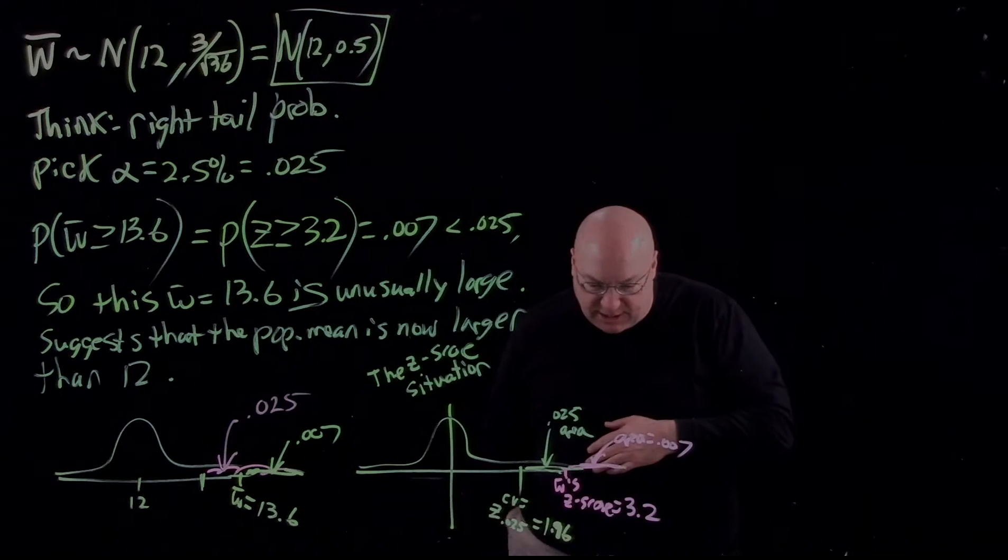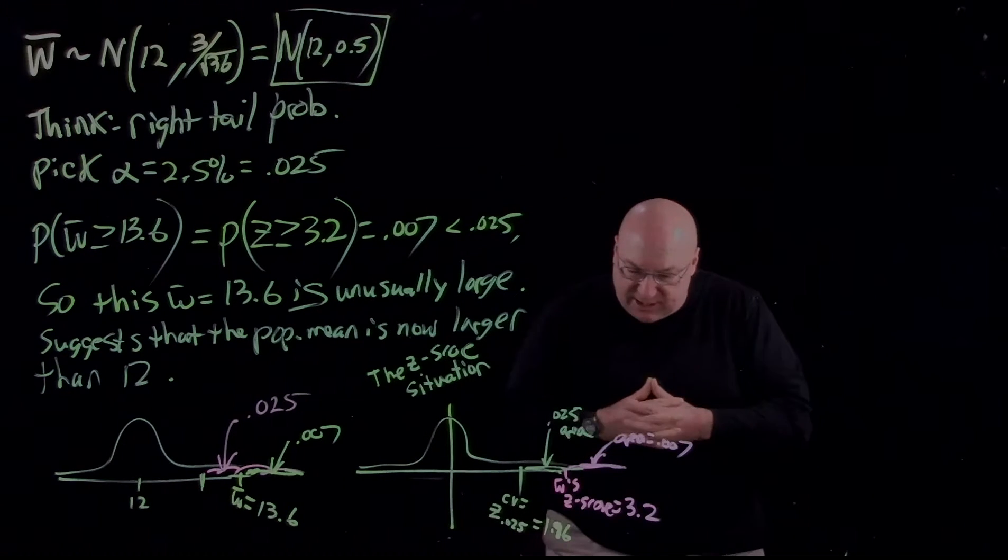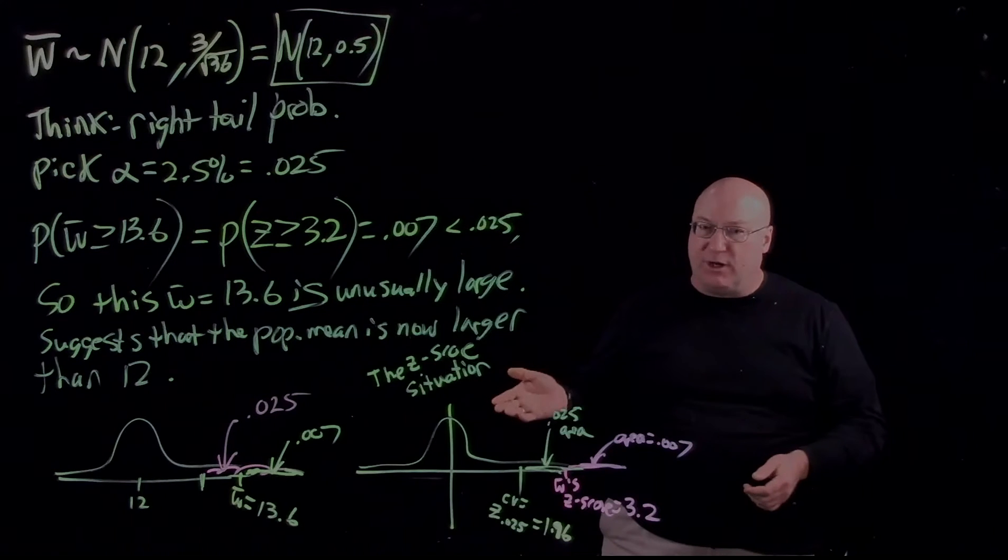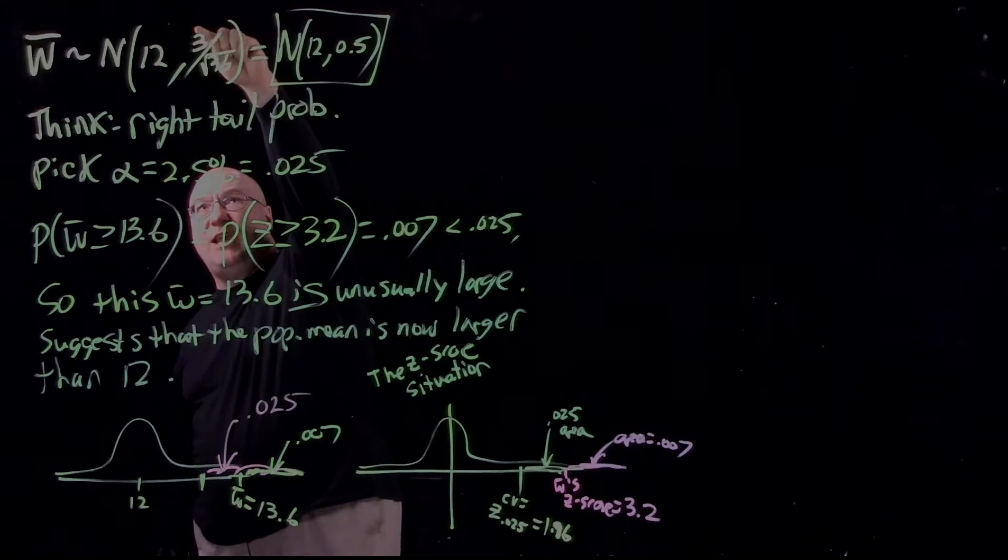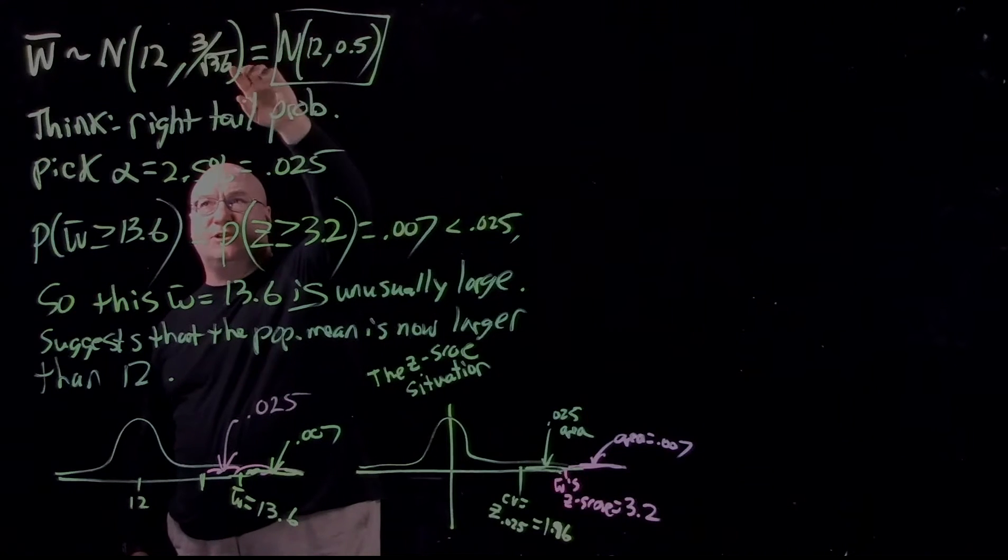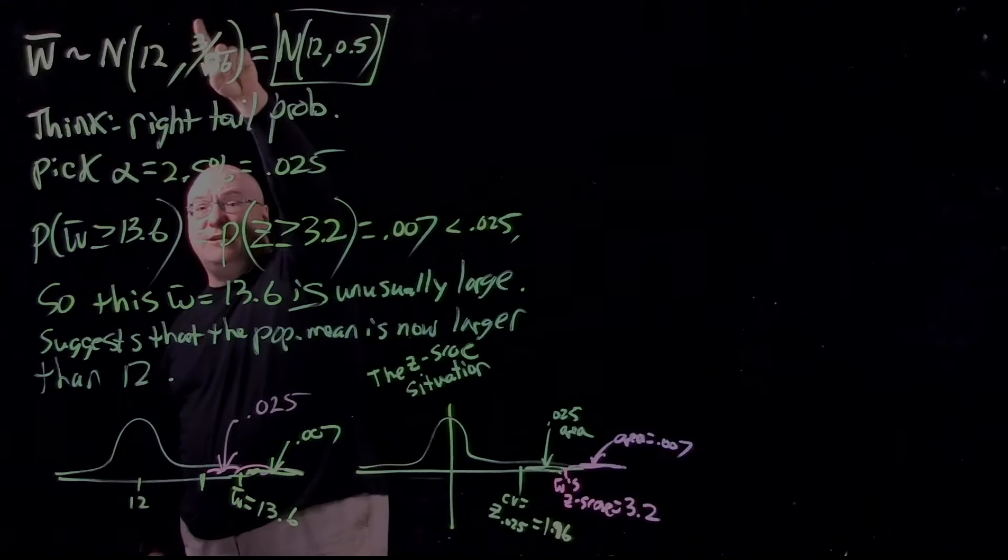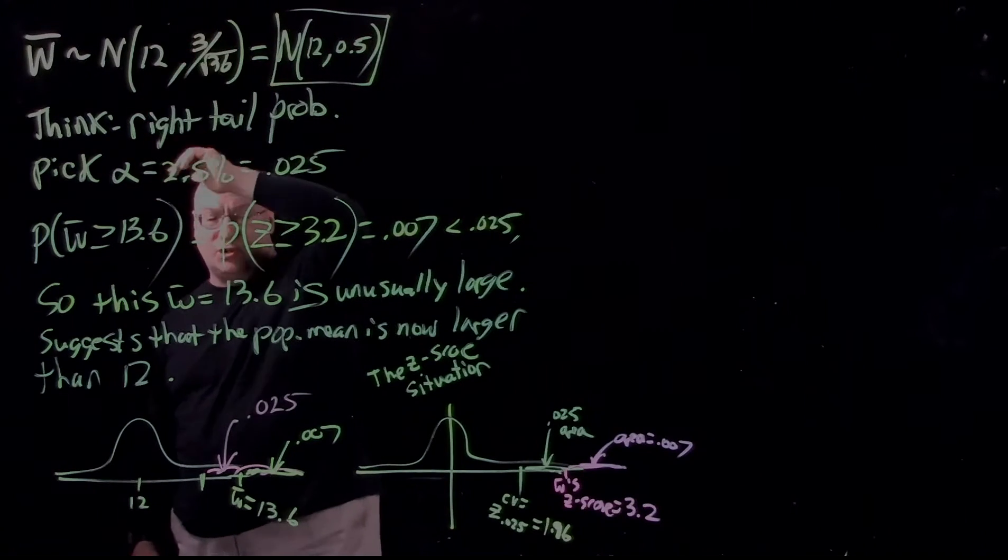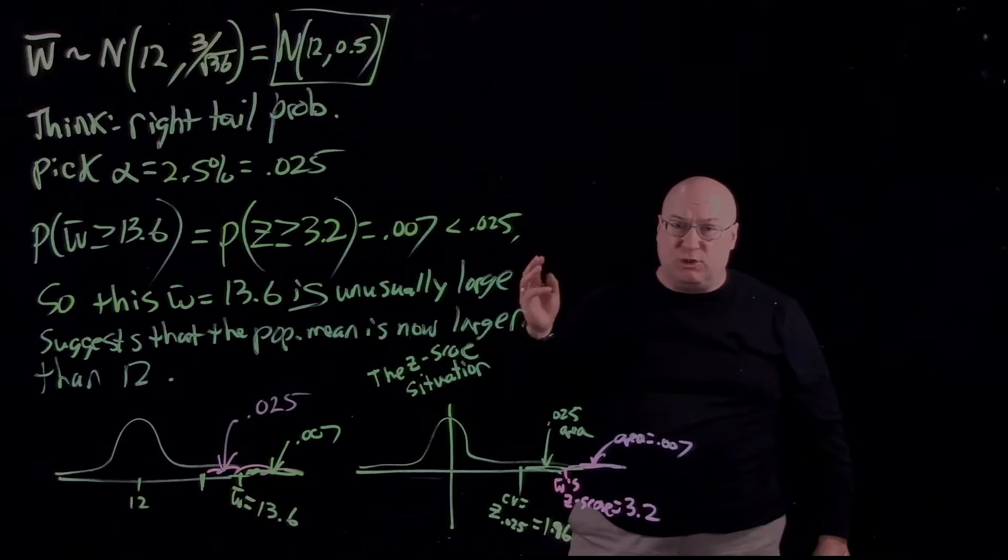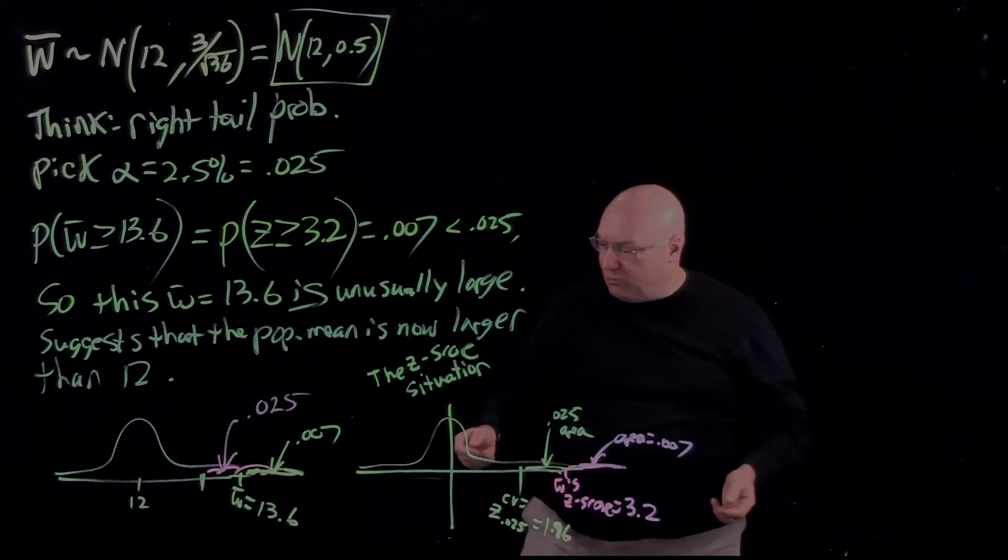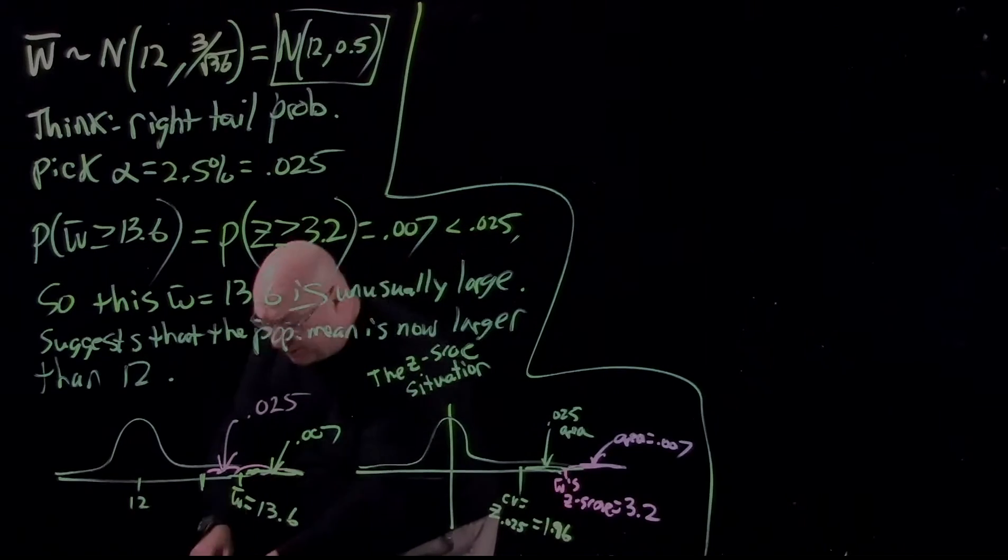Note how we used the Z-score of the sample mean, which means we essentially assume that the population standard deviation would not change when the fertilizer was applied. I assumed the standard deviation staying the same, the 3 staying the same, so that I can take the 3 divided by the square root of N to get my standard deviation. But maybe the standard deviation of the original population would change upon applying the fertilizer, or it might be that we didn't even know that the standard deviation was 3 to begin with. So we might be in a situation where we simply don't have the standard deviation to work with.